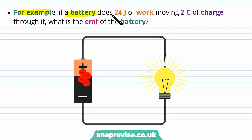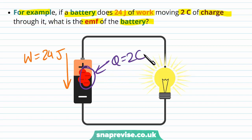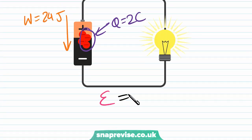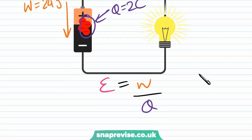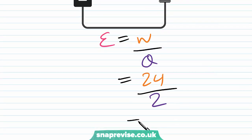For example, if a battery does 24 joules of work moving two coulombs of charge through it, what is the EMF of the battery? The work done by the battery is 24 joules and the charge is two coulombs. Writing our equation for EMF — EMF equals work done divided by charge — we calculate: 24 joules divided by 2 coulombs, giving us an EMF of 12 volts.